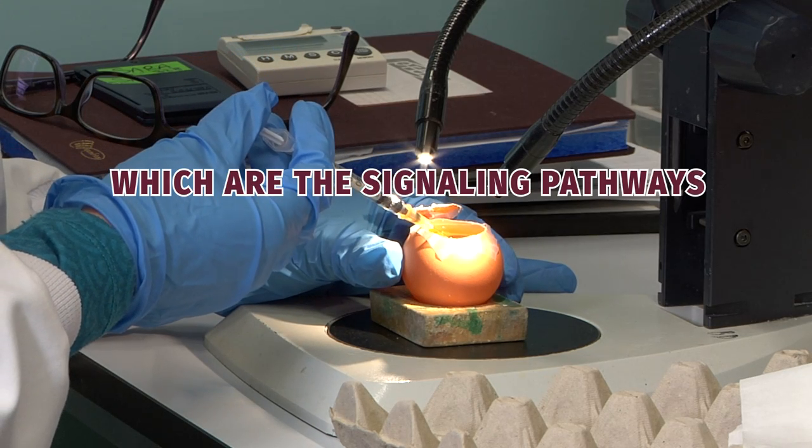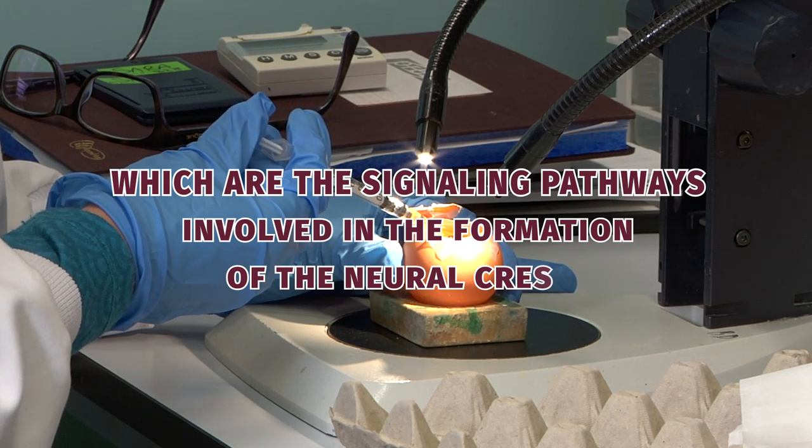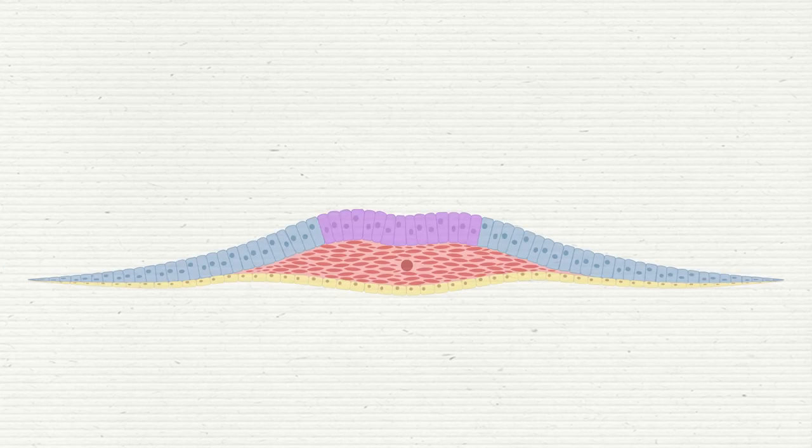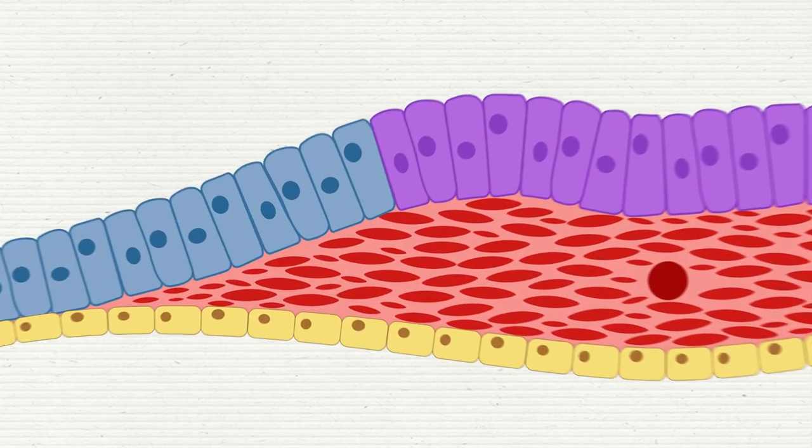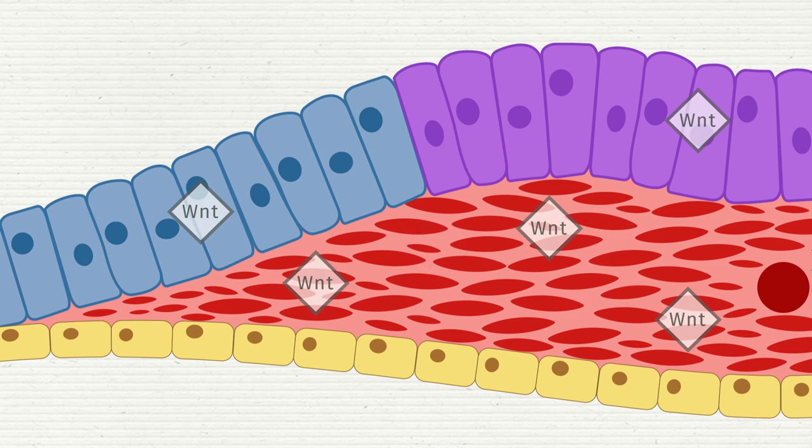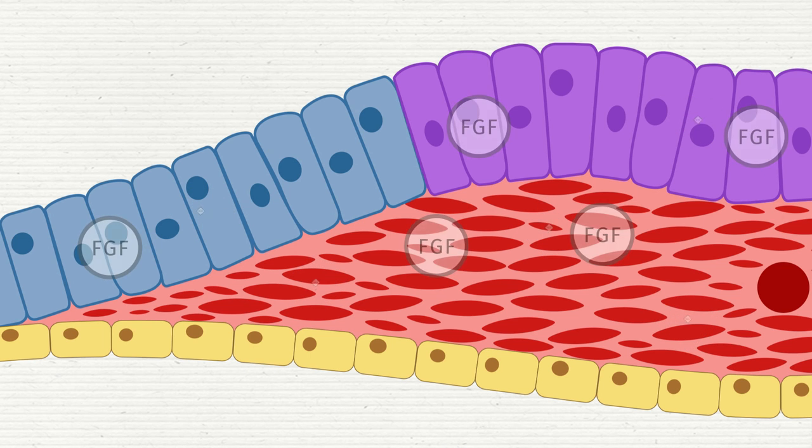Which are the signaling pathways involved in the formation of the neural crest? The neural crest is induced during gastrulation and its early development can be explained in a two-step process. During gastrulation, an initial phase of FGF signaling from the ectoderm and mesoderm, Wnt signaling from the ectoderm and mesoderm, and low or negative BMP signaling from the ectoderm induces the neural plate border.